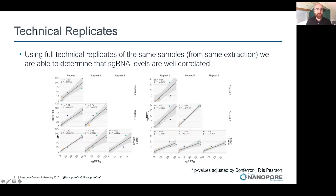To assess reproducibility, we repeated two samples four times each using technical replicates from the same RNA. There is good agreement between each of the replicates, with correlation values generally above 0.88, all significant after multiple testing correction.